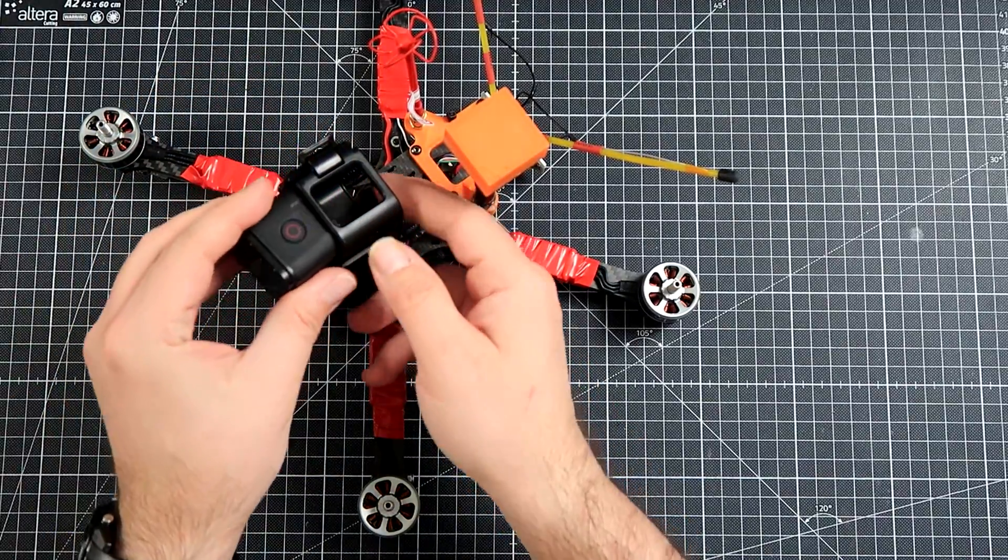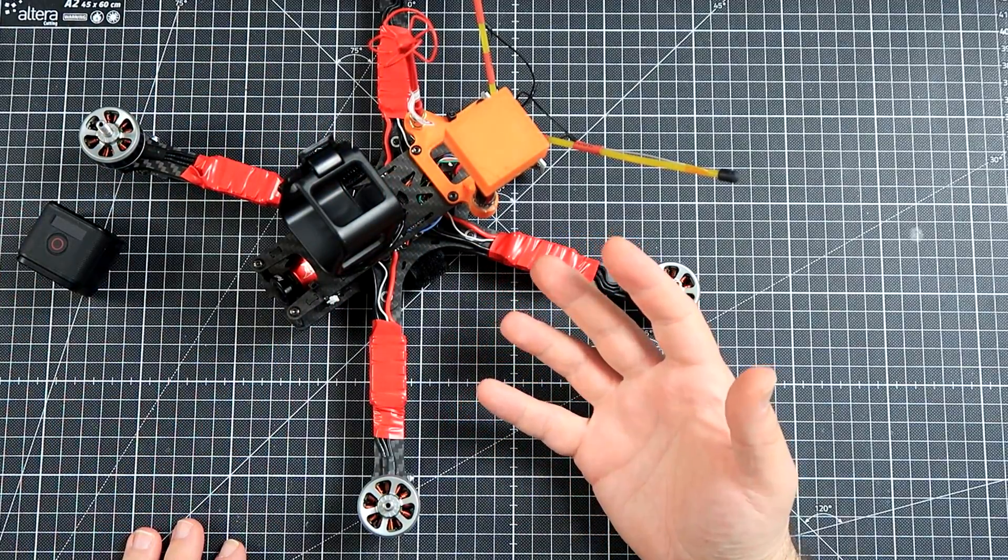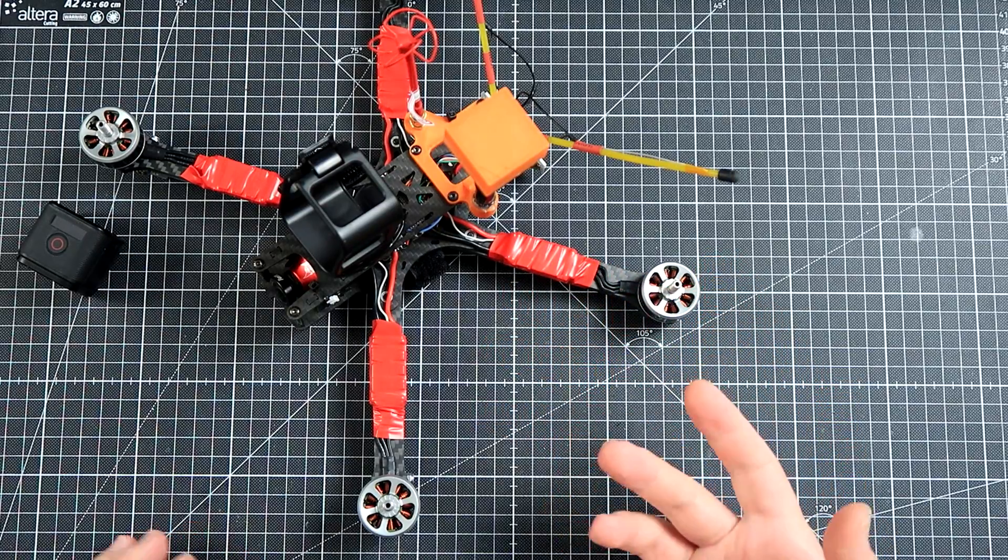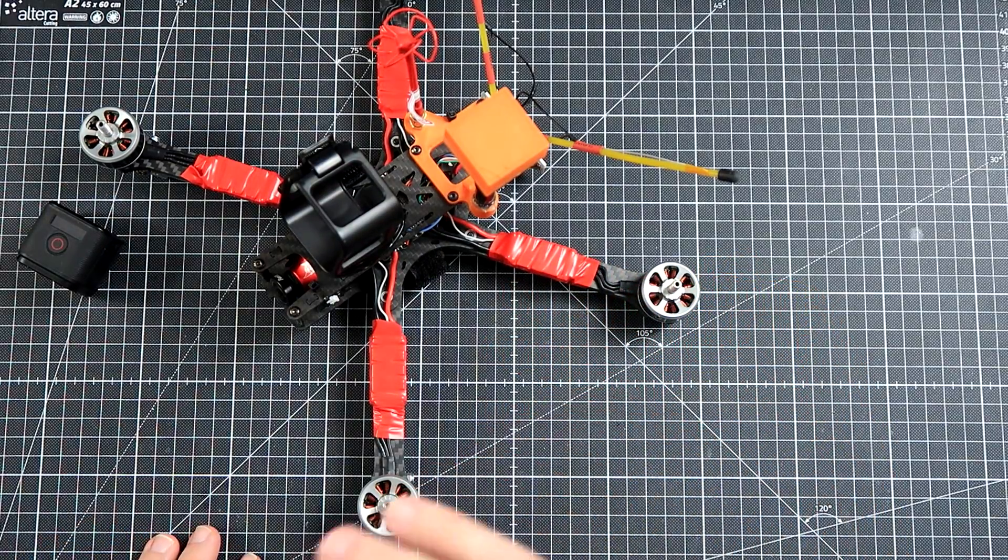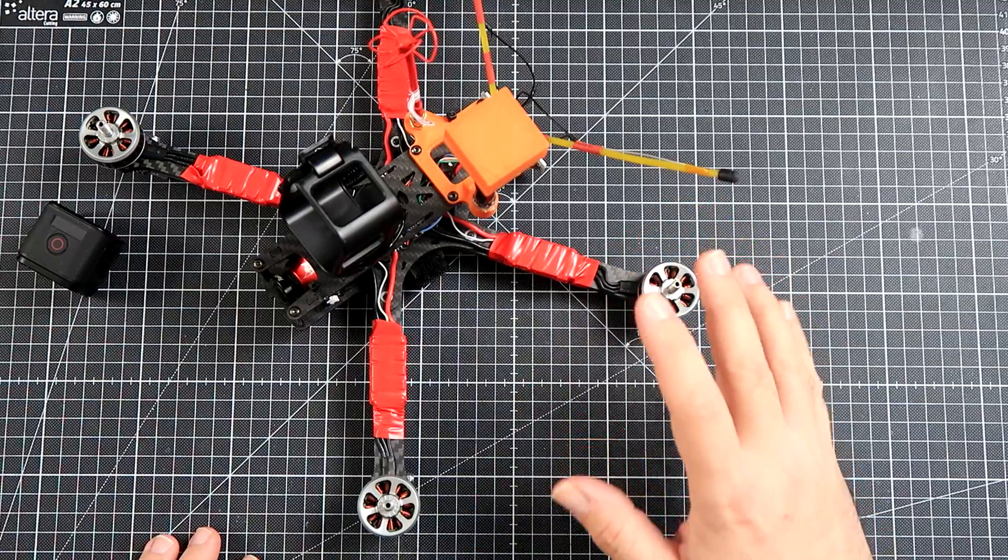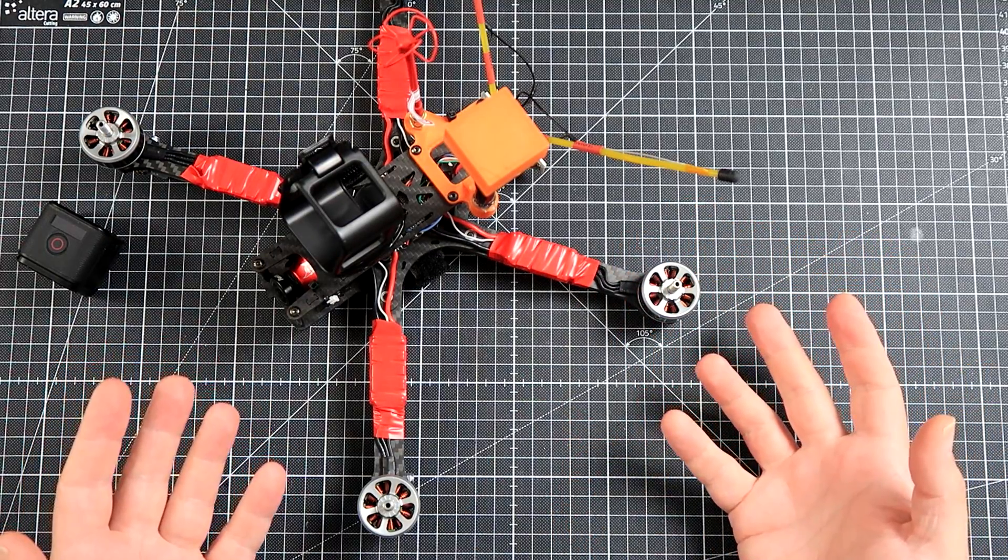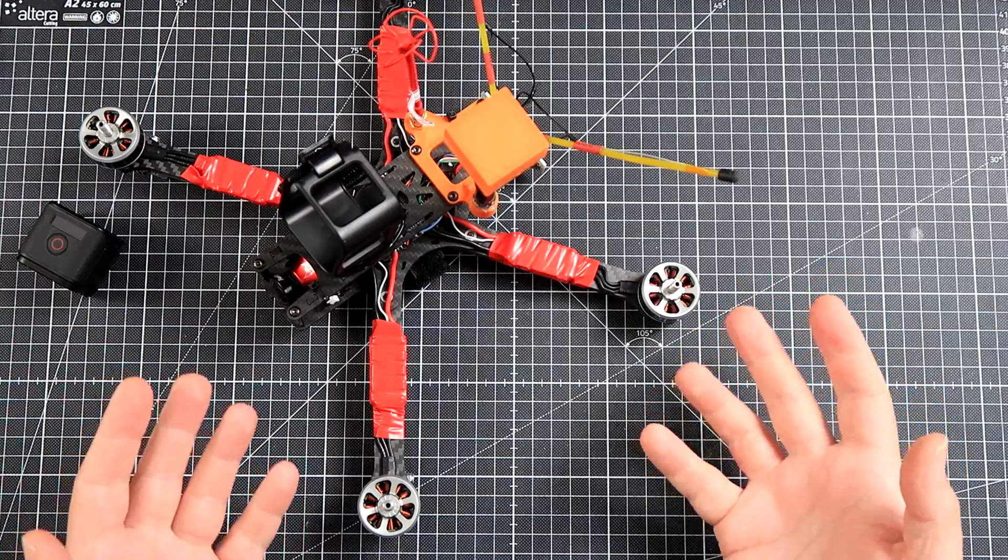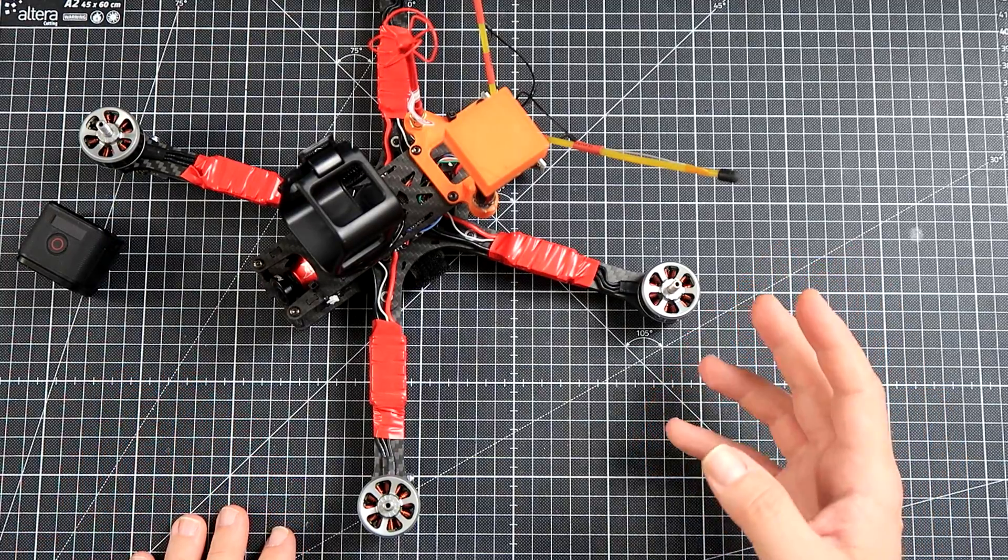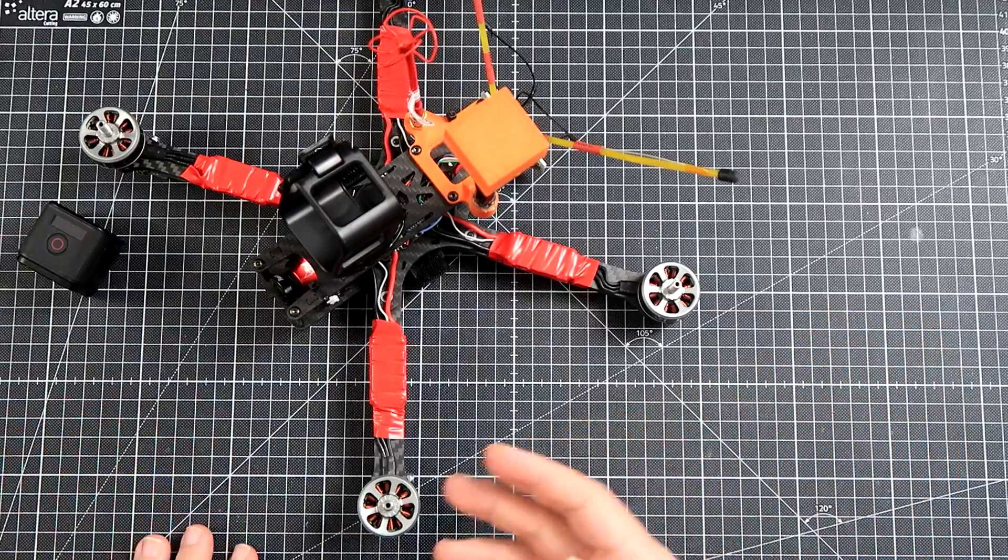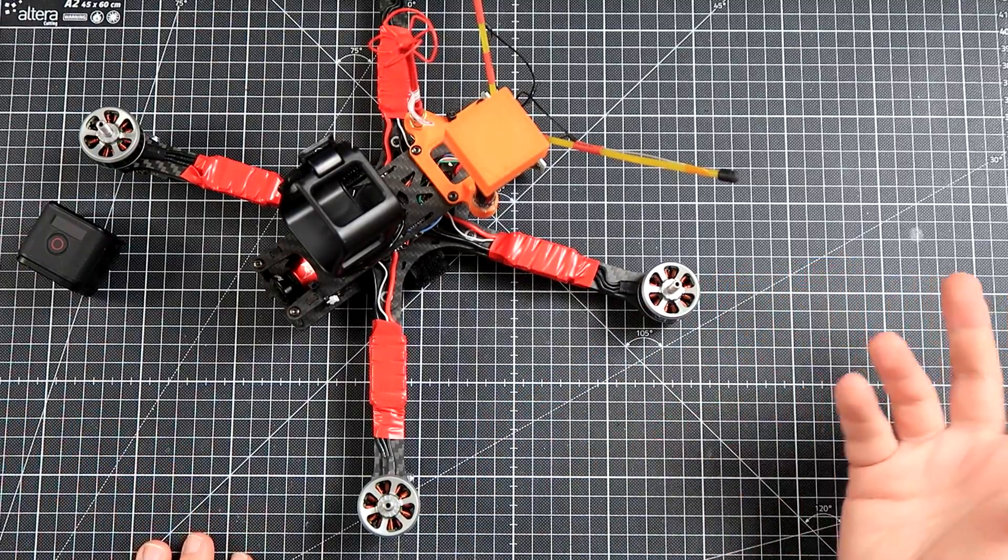But back in the days when I was still flying 10 inchers and 12 inchers and they were really a thing, I got me a gimbal. Cheap, literally the cheapest thing I could find. It cost like 50, maybe 60 bucks. It was crappy but it kind of worked, big and bulky, and for the last two years it was just lying somewhere in the drawer.